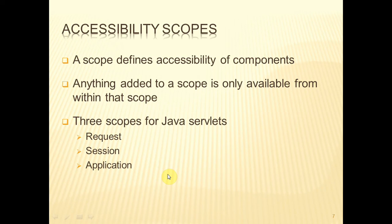A scope essentially defines the visibility or accessibility of various components. Anything that is added to a scope is then only available within that scope. So a scope has some very well-defined boundaries. Anything that is inside the boundary is available within that boundary, and anything that is outside of that boundary is not available from within that boundary.